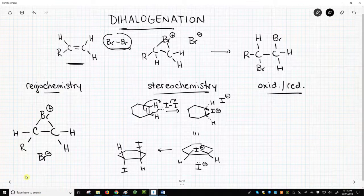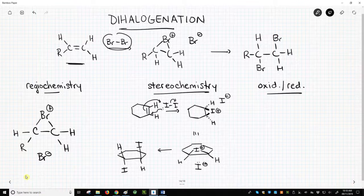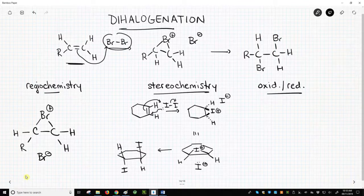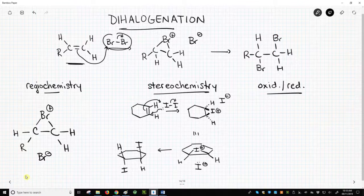For the first step of this reaction, we will have three mechanism arrows. I'll mention each arrow separately, but keep in mind that all these electrons move at the same time. They don't move sequentially. First, we'll show the carbon-carbon pi bond attacking one of the bromines. Second, the bromine-bromine bond breaks with electrons going to the other bromine.